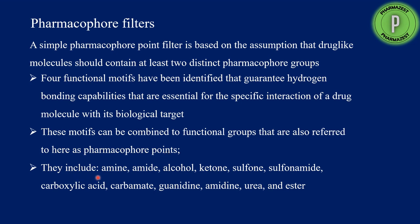Pharmacophore points can be amines, amides, alcohols, ketones, sulfones, sulfonamides, carboxylic acids, carbamates, guanidines, amidines, ureas, and esters. These functional groups are called pharmacophore points and are responsible for the action of the drug molecule on the protein target. These are the four different filters — simple counting methods, functional group filters, topological filters, and pharmacophore filters — which help in assessing the drug likeness of a new molecule.